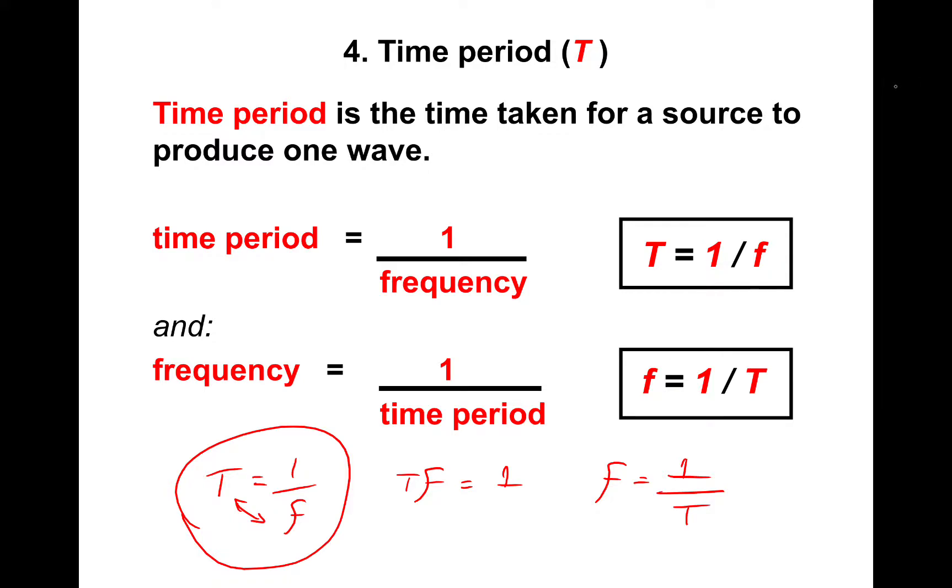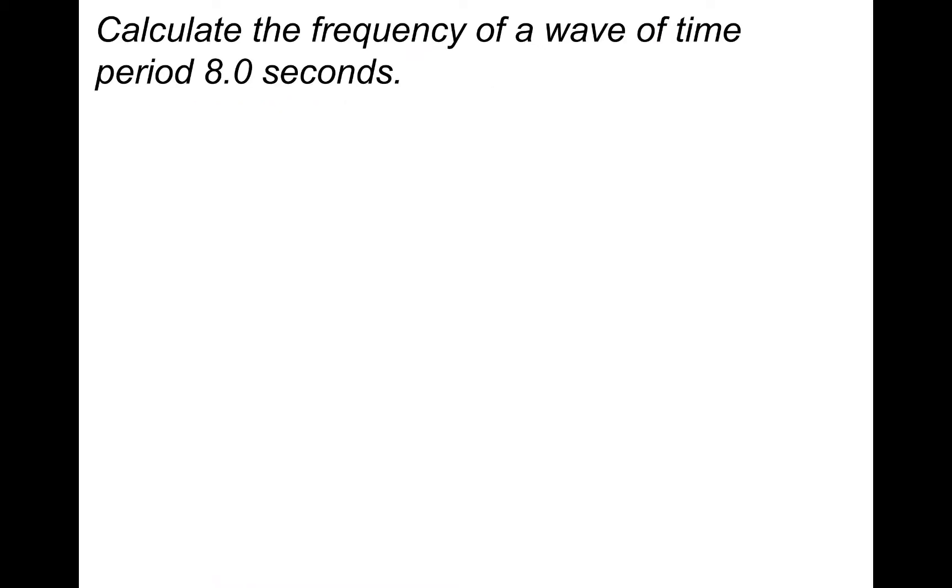Alright let's do some practice questions to finish. Calculate the frequency of a wave of time period 8 seconds. So pause and have a go at that. Let's go through the answer now. So frequency is one over the time period so it's simply one divided by eight which gives the frequency of 0.125 hertz. If you've written 0.13 hertz that's completely fine.